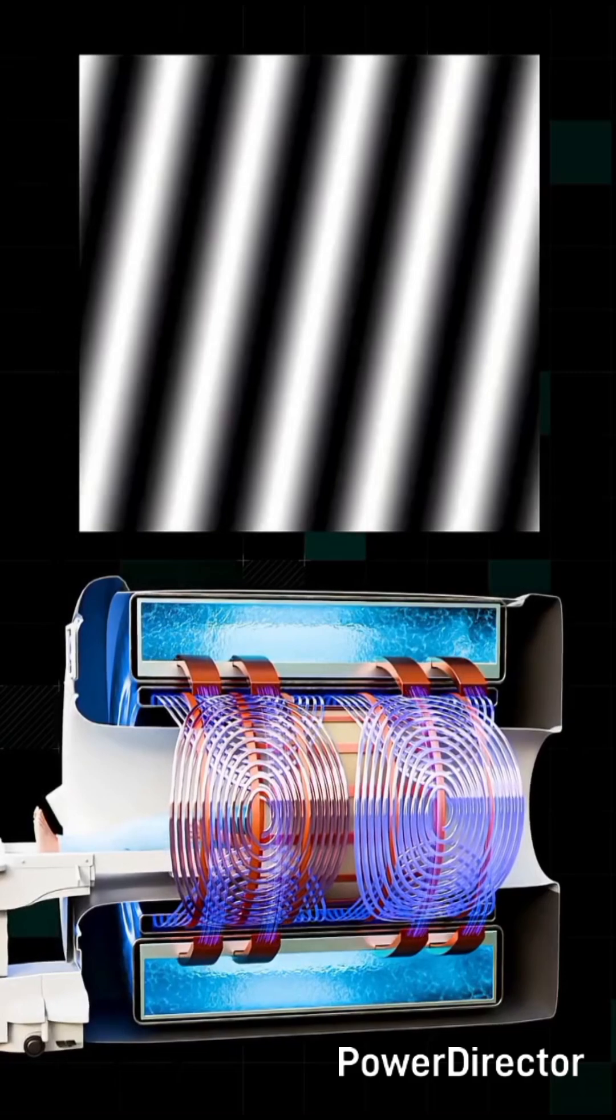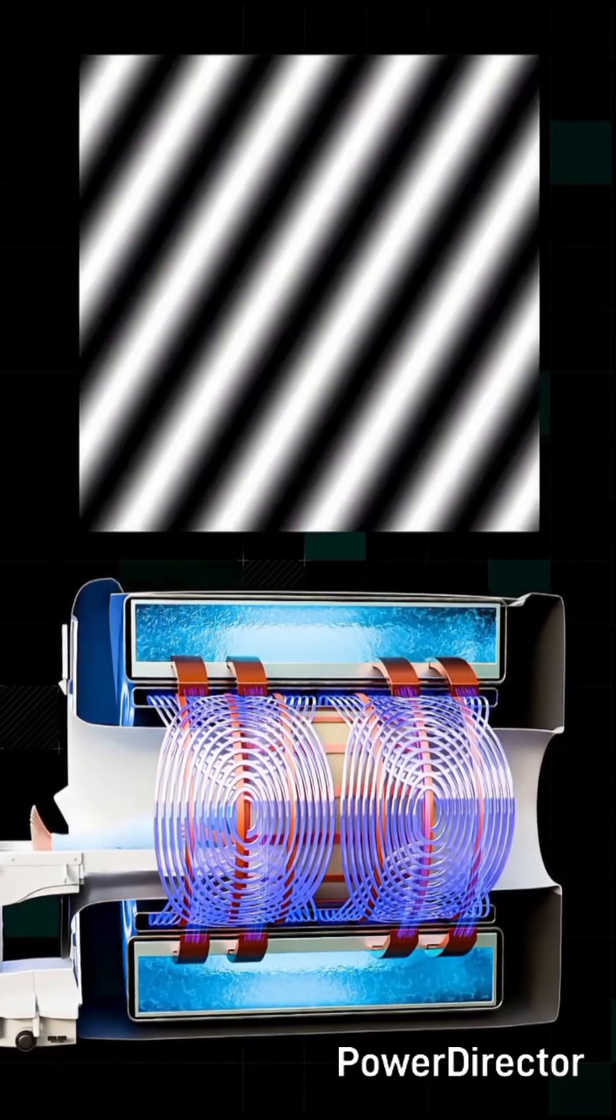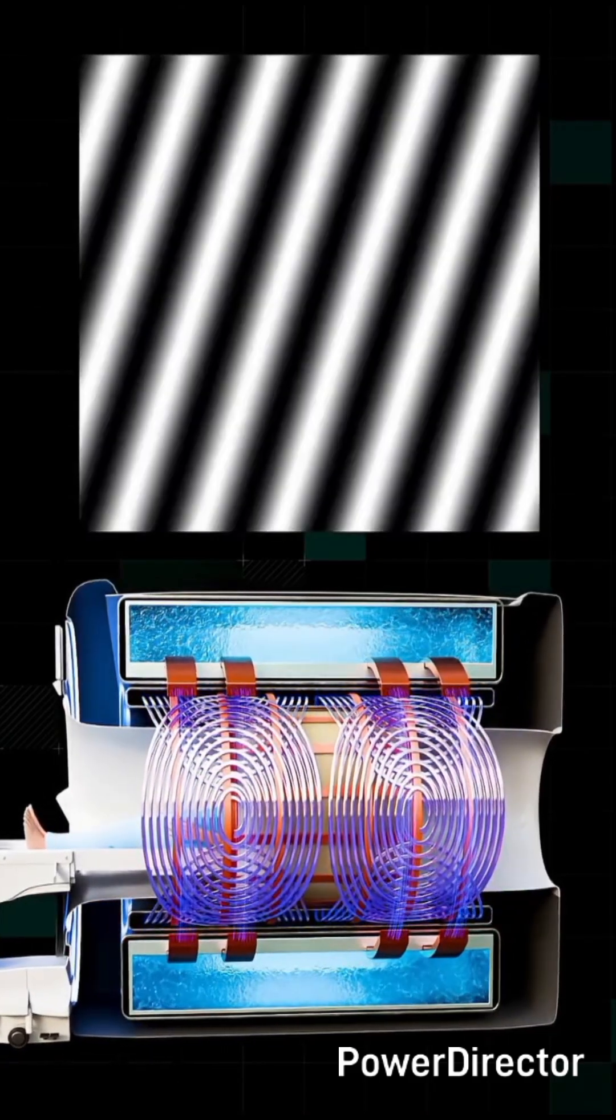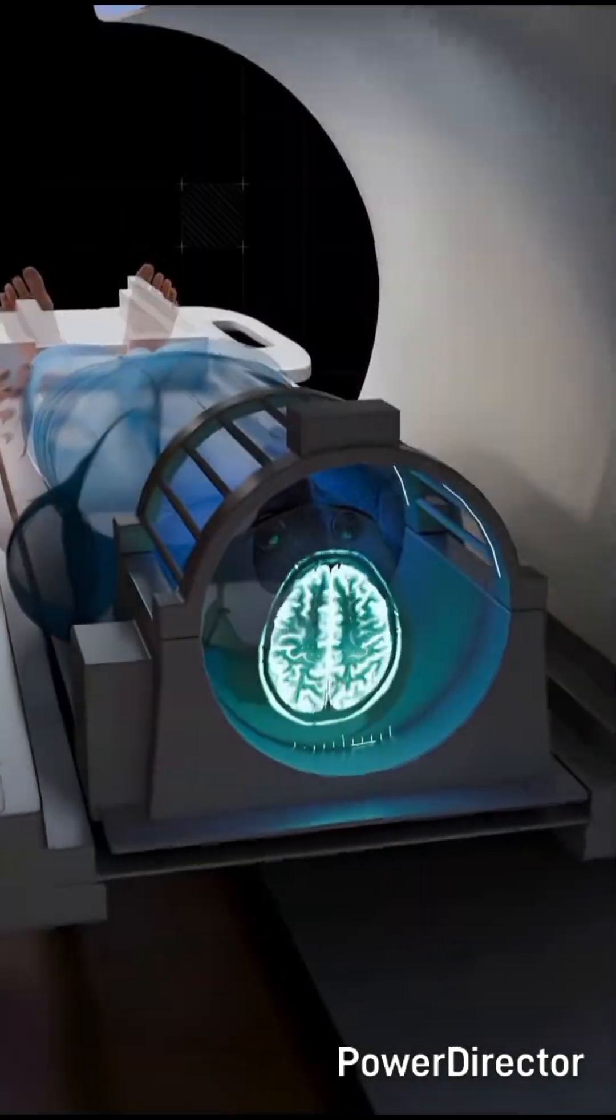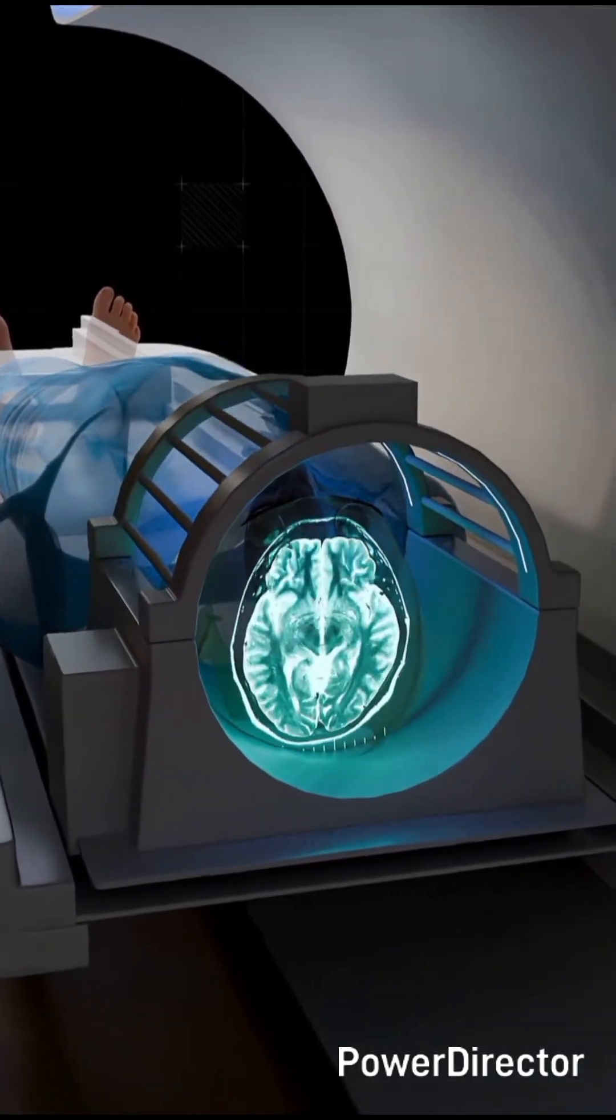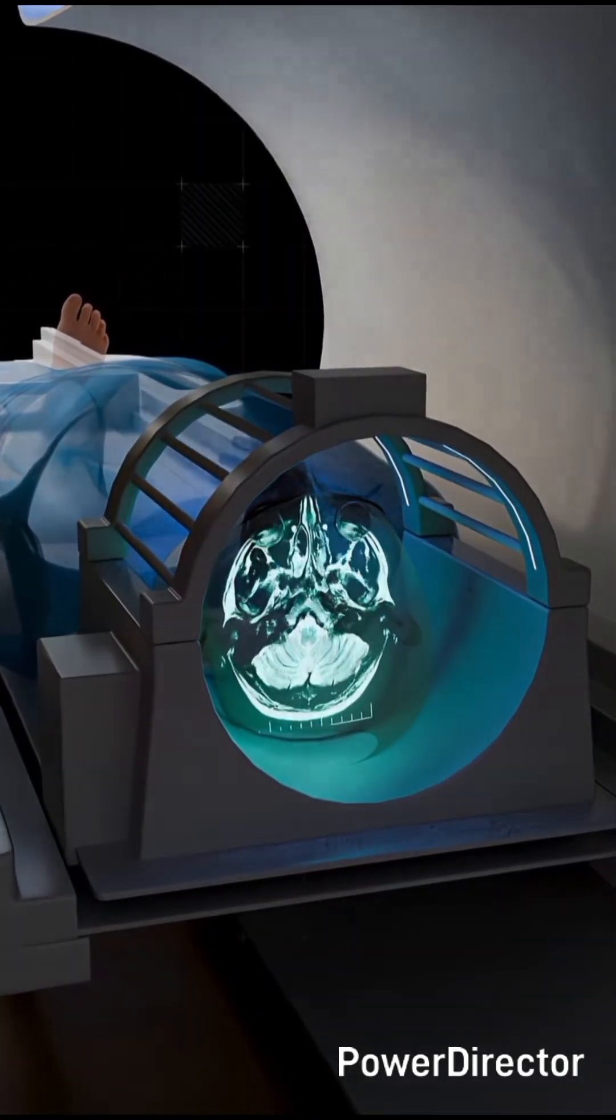By repeating the process many times with different gradient settings and timings, the machine collects a whole library of patterns. Finally, all these patterns are combined mathematically using a Fourier transform, converting them into a sharp, high-contrast image. Repeating this slice by slice builds up a complete 3D scan of your body.